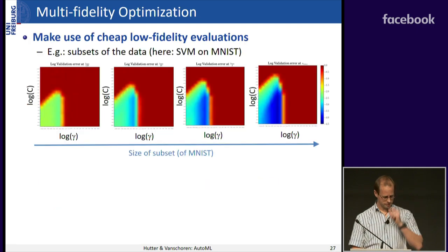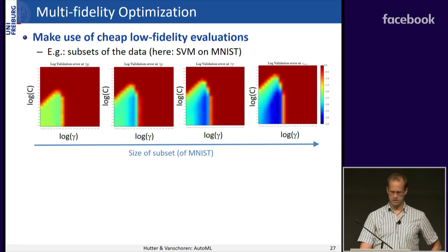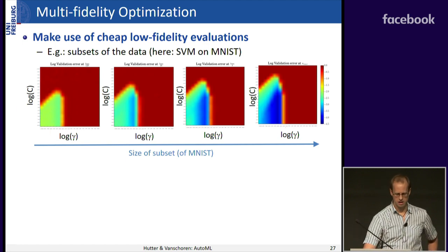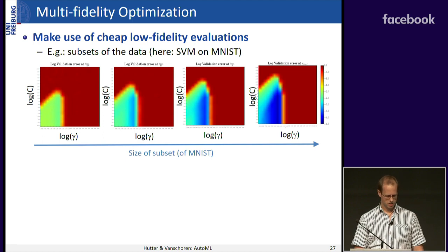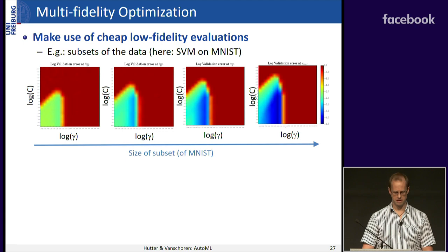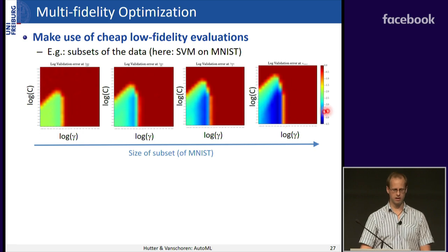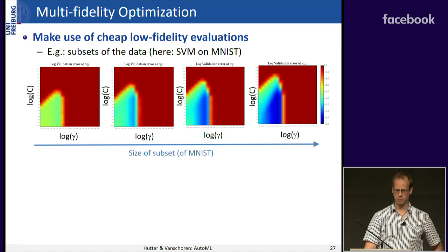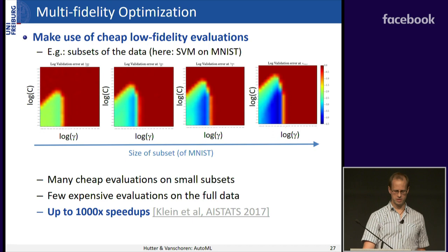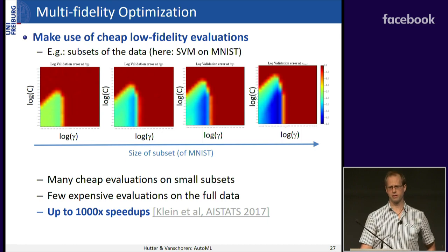Here's an example: an SVM fit on MNIST. Comparing the full 50,000-point dataset to roughly 400 points, the response surfaces for hyperparameters C and gamma look quite similar. You don't want to do many expensive evaluations to figure out a bad region of the space when you can determine this on much cheaper approximations. Evaluations on the small subset are about 10,000 times cheaper because SVMs scale super-linearly in data points. By doing many cheap evaluations on small subsets and few expensive evaluations on the large dataset, you can achieve up to 1,000-fold speedups over standard Bayesian optimization.